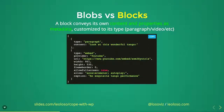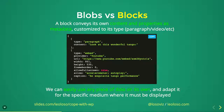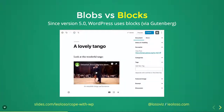Now let's talk about blocks and how they change the situation. A block conveys its own content and properties as metadata customized to its type — a paragraph block, a video block, an audio block, an image block. As data, it's basically a JSON array with two entities. The first says type paragraph and has its content. The second says type embed provider YouTube and has a URL. Each piece of data, depending on its type, can have its own properties. We can easily use any piece of data on its own and adapt it for the specific medium. If we're watching a video on Apple Watch, I don't need to pay attention to width and height — I just show the URL.